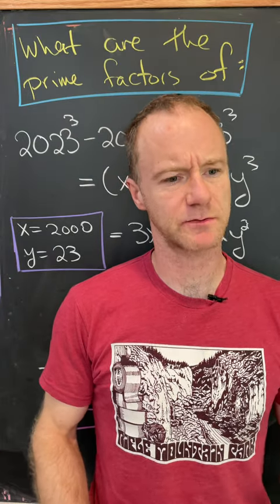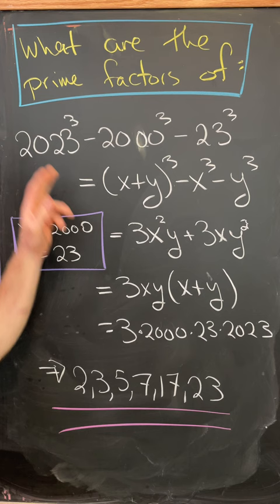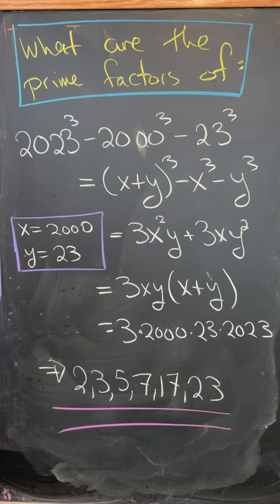Today I've got a nice algebra problem that is disguised as a number theory problem. So our goal is to find the prime factors of 2023 cubed minus 2000 cubed minus 23 cubed.